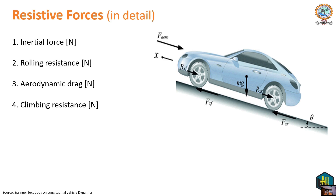Rolling resistance occurs when the vehicle tires make contact with the ground — there is always a coefficient of friction developed, and due to this friction coefficient there is a rolling resistance. Aerodynamic drag acts on the vehicle as it moves through air. Climbing resistance has the value mg·sin(θ) and acts opposite to motion when the vehicle moves uphill; when moving downhill it acts with the vehicle and contributes to the driving force.